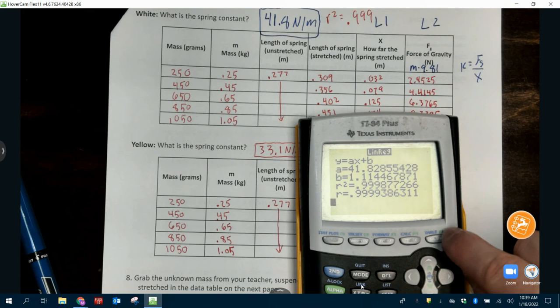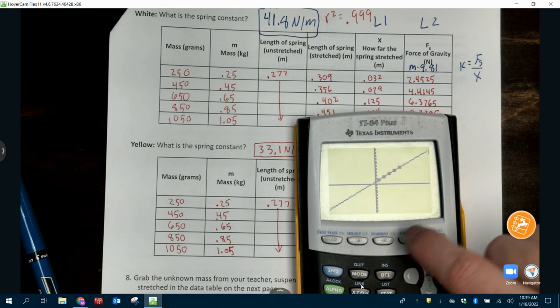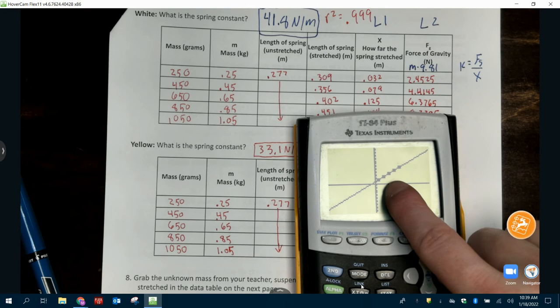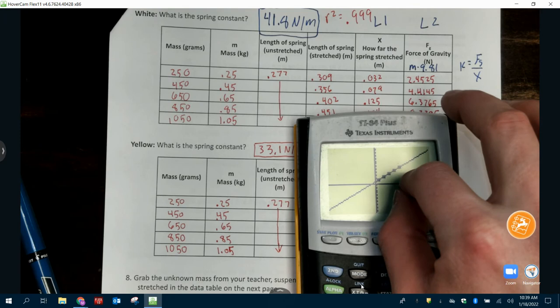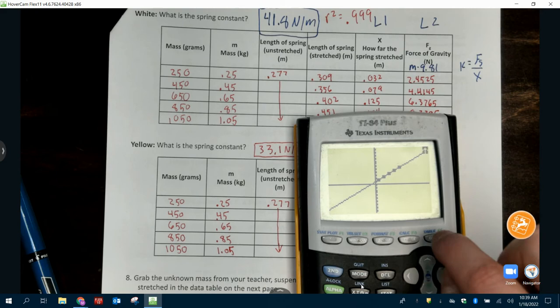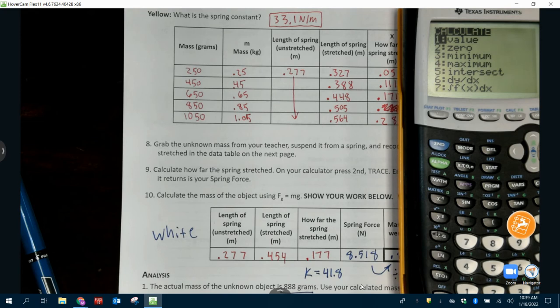From here, you go to graph. You can zoom in or out. What you need is, mine is fine, but you need the whole thing to show here. Does that make sense? If you're zoomed in too much, you can't see it. If you're zoomed out, it can't trace it.